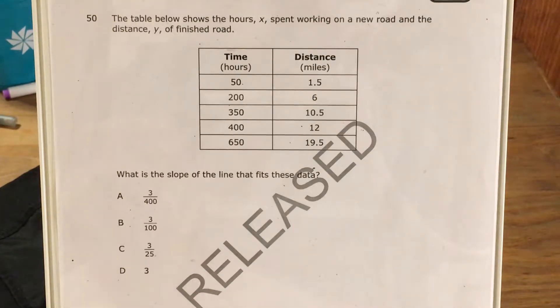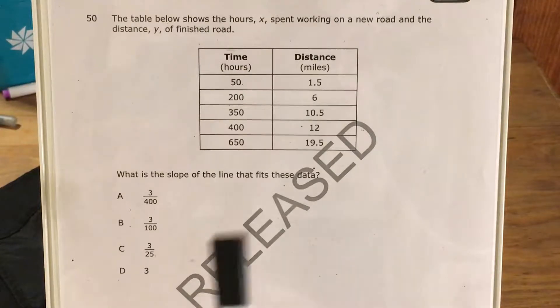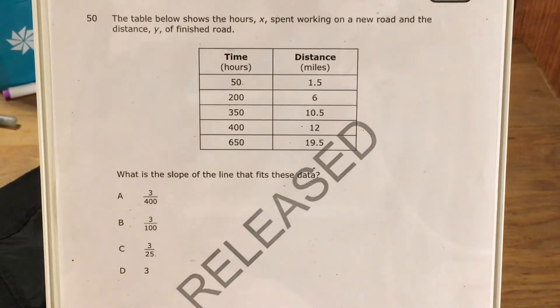What's up math scholars and math haters? This is Mr. W. Today we're gonna tackle question 50 in the Math 1 questions that North Carolina released this past school year. We can see that we have this table that represents the hours X spent working on a new road and the distance Y of road that was finished, and we're supposed to find the slope of the line that fits this data.